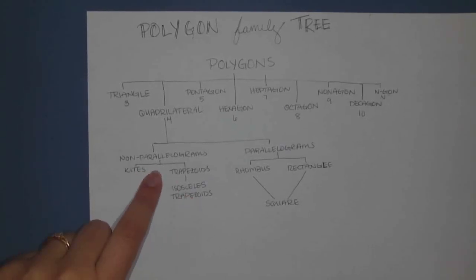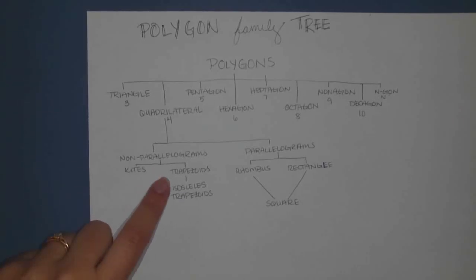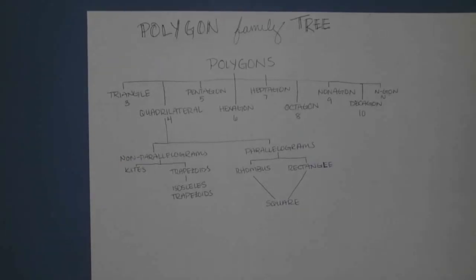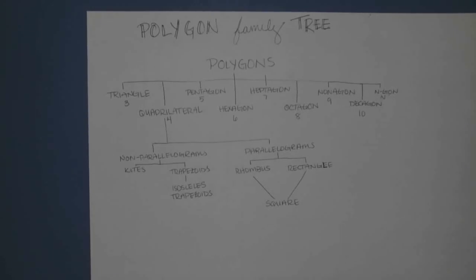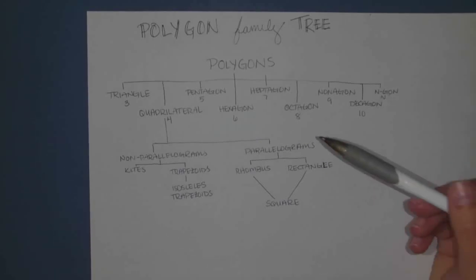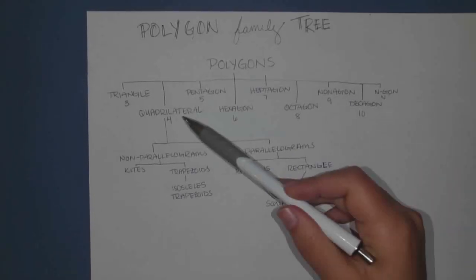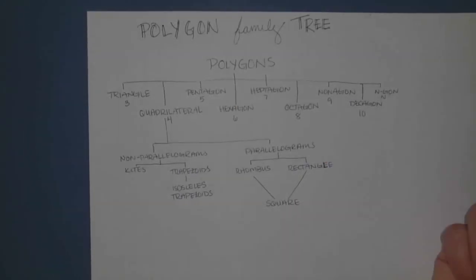The non-parallelograms we have are kites and trapezoids, and underneath trapezoids we have isosceles trapezoids. There are other quadrilaterals that are not parallelograms but don't technically have a name. So if I had a question like 'give all the possible names for this shape' and it was a rectangle, you would say it's a rectangle, a parallelogram, a quadrilateral, and a polygon.